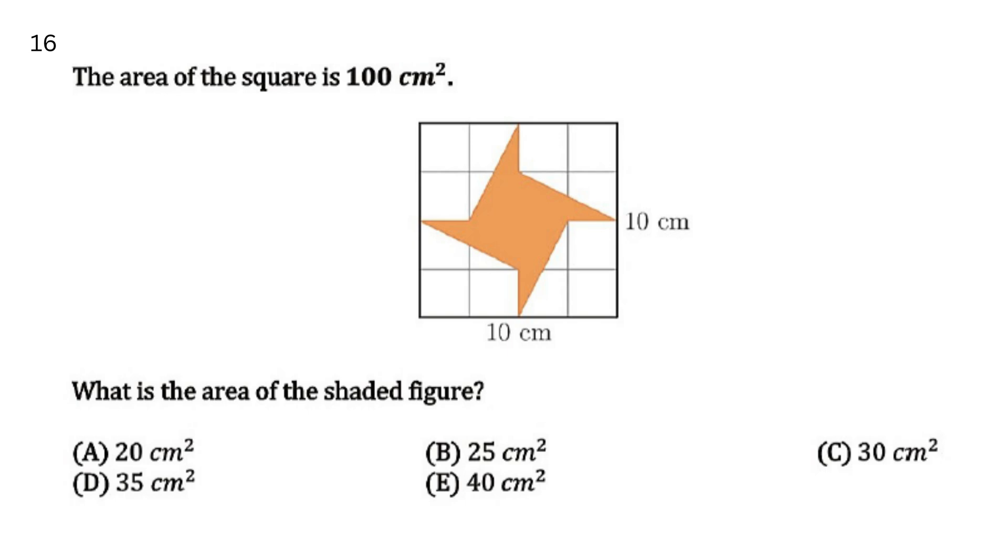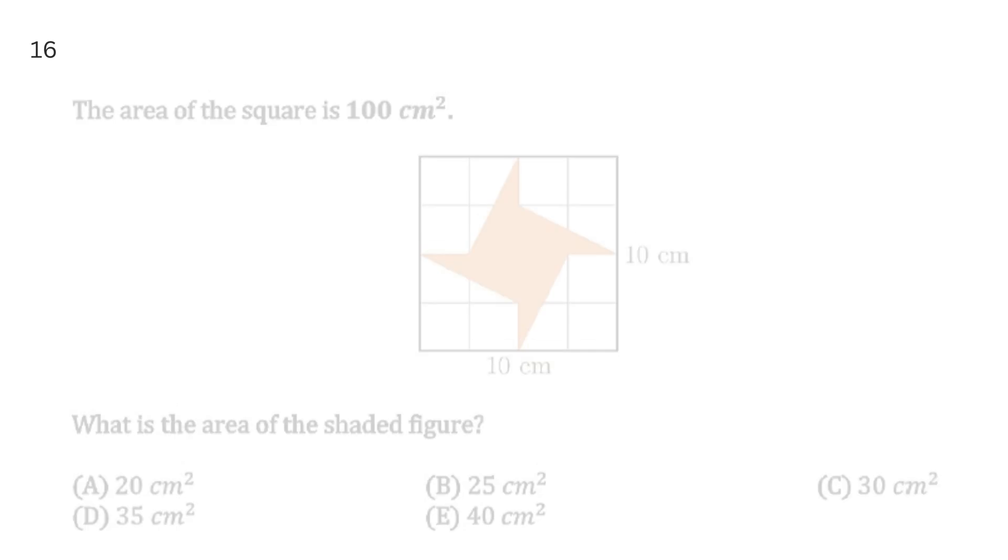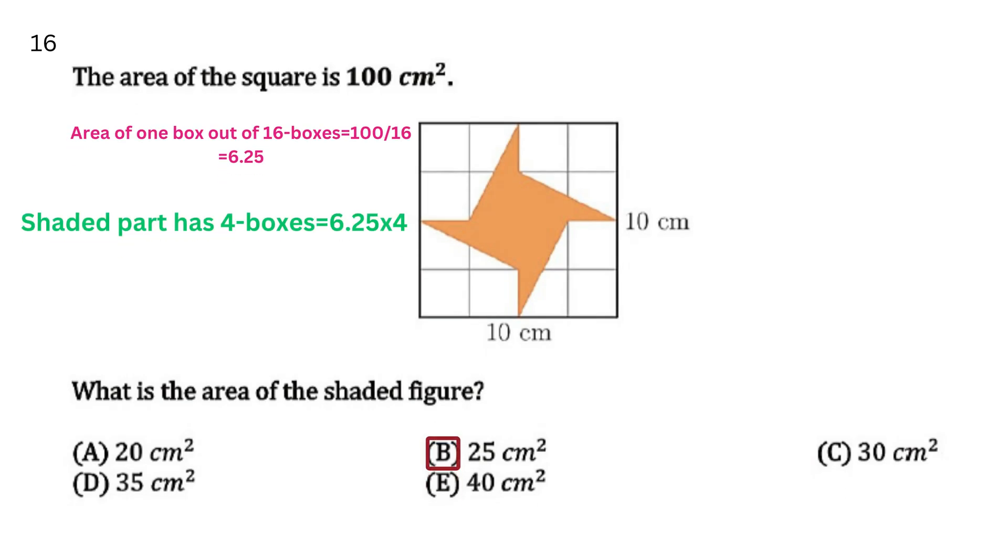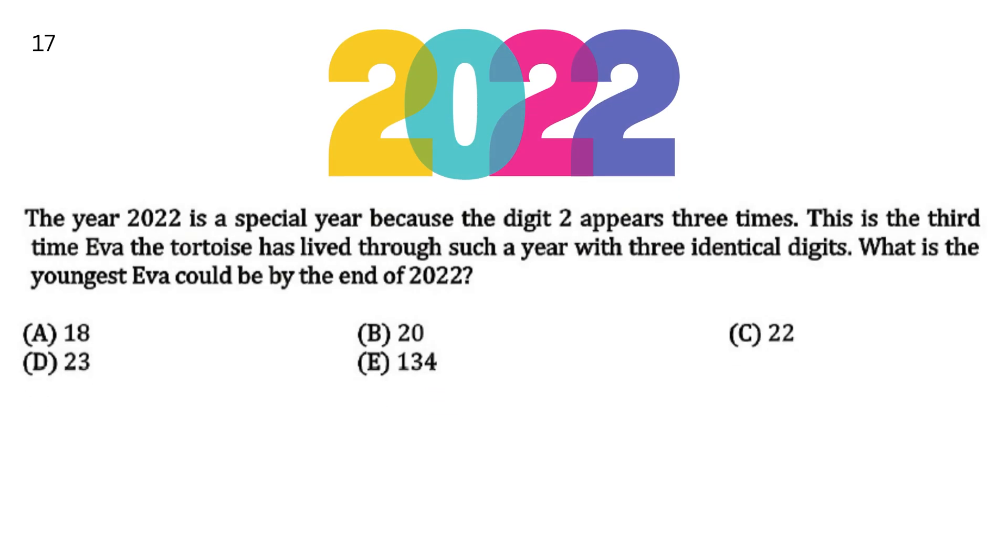The area of a square is 100 cm². What is the area of the shaded figure? Your options are A 20 cm², B 25 cm², C 30 cm², D 35 cm², and E 40 cm². The answer is B, as explained.